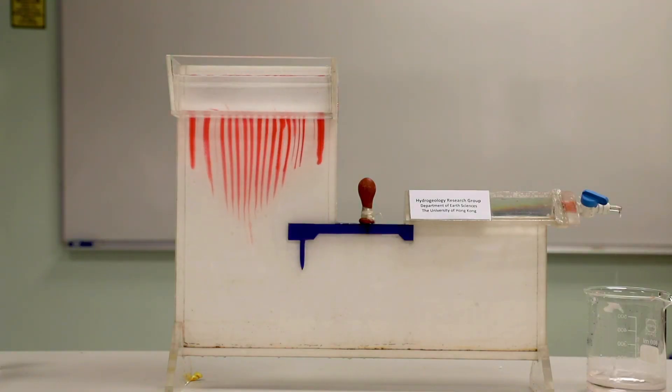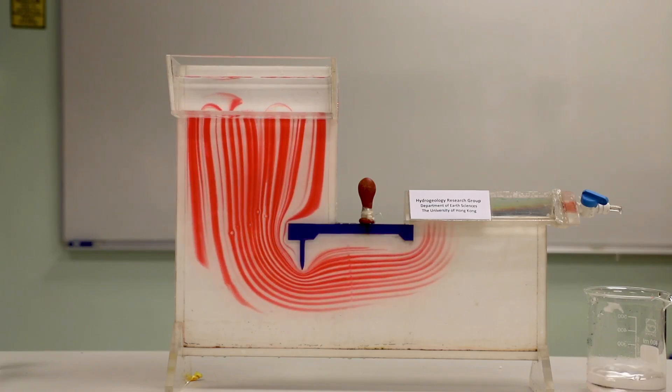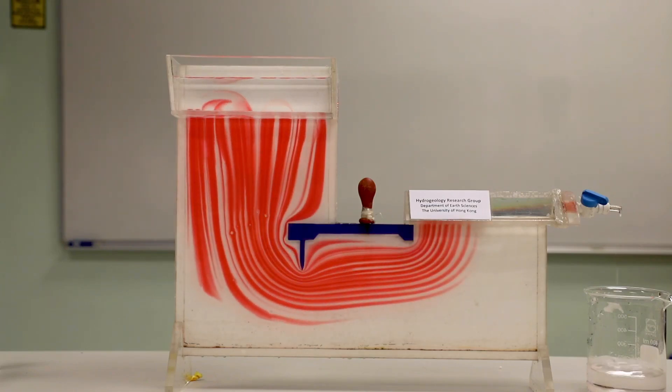This is the system that we drew the flow net for. Notice the similarity of the lines indicated by the dye and the lines drawn in the flow net.